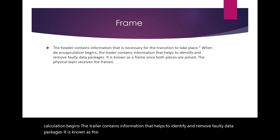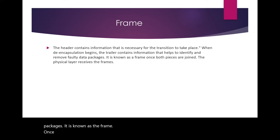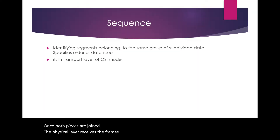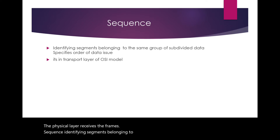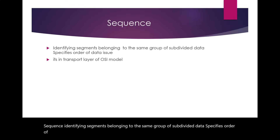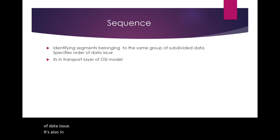Once both pieces are joined, the physical layer receives the frames. Sequence: Identifying segments belonging to the same group of subdivided data specifies the order of data issue. This also occurs in the transport layer of the OSI model.